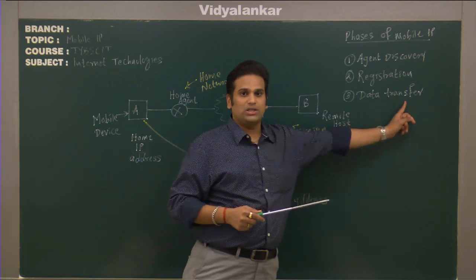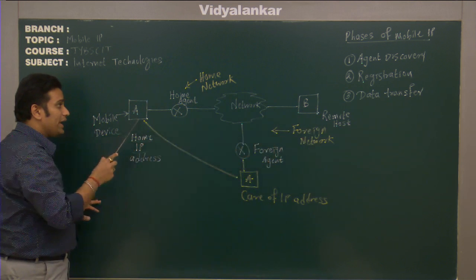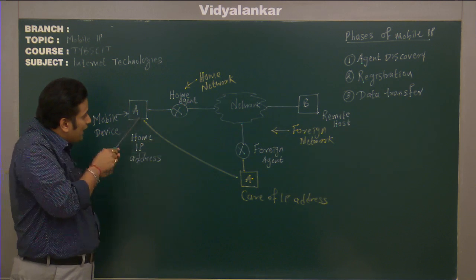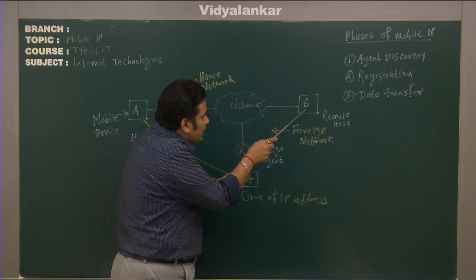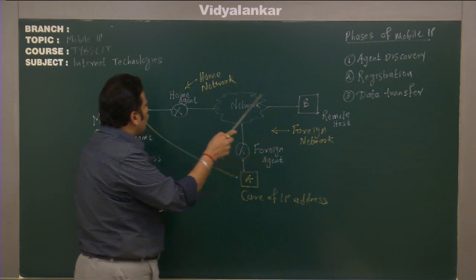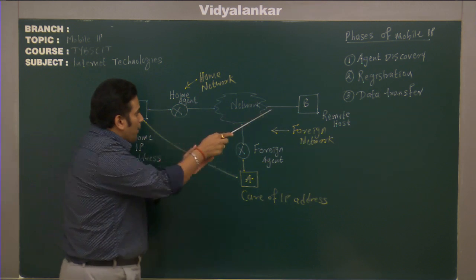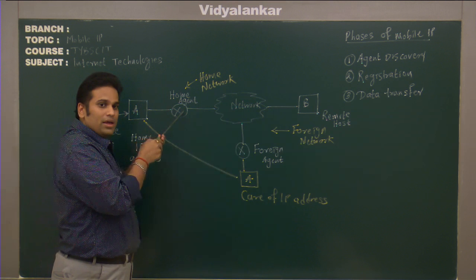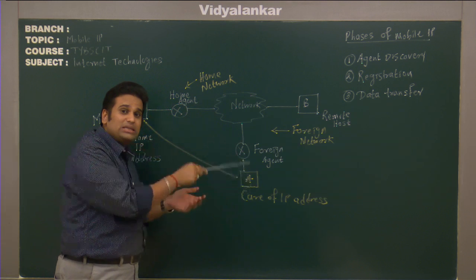The third phase is Data Transfer. Assume machine B, a remote host, was communicating with machine A in its home network. Machine B is not aware that machine A has moved from its home network to a foreign network. So machine B sends a packet to machine A using its home IP address. When the packet reaches the home agent, the home agent understands that machine A is not in the home network, so it forwards the packet to the foreign agent where machine A is currently residing.